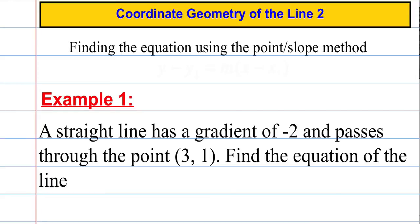First of all we're going to look at finding the equation of a line using the point-slope method, and this is another important formula that you must know off by heart. The formula you need is y minus y₁ equals m times x minus x₁, where x₁, y₁ is a point and m is the gradient of that line.